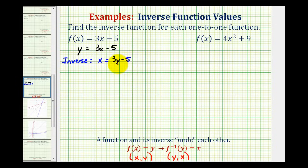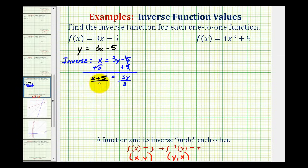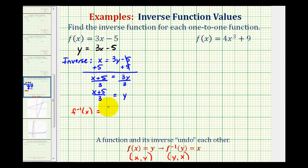We want to solve this for y and then replace y with inverse function notation. To solve for y, we start by adding five to both sides of the equation. So on the left we have x plus five, and on the right we just have three y. Dividing both sides by three gives us y equals the quantity x plus five divided by three. This is our inverse function, so we replace y with f inverse of x. So f inverse of x equals the quantity x plus five divided by three.